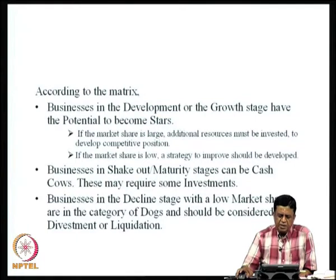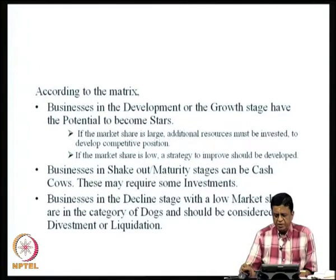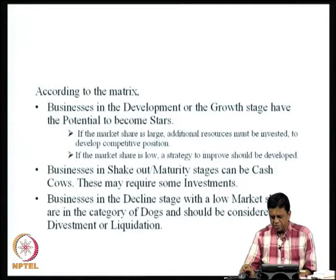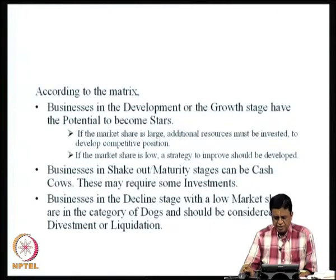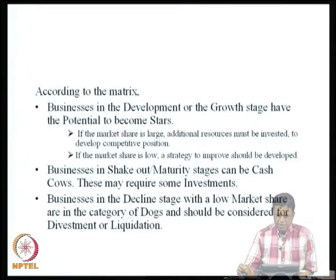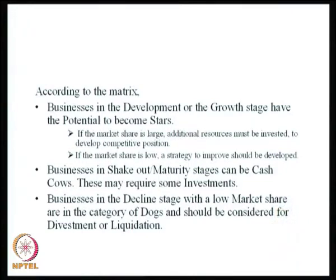According to the matrix, businesses in the development or growth stage have the potential to become stars. If the market share is large, additional resources must be invested to develop competitive position. If the market share is low, a strategy to improve should be developed. Businesses in the shake out/maturity stages can be cash cows — this may require some investments, but not always. Businesses in the decline stage with a low market share are in the category of dogs and should be considered for divestment or liquidation, salvaging as much value as possible.